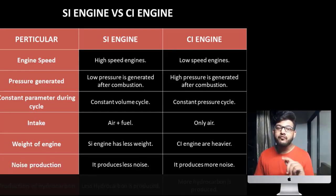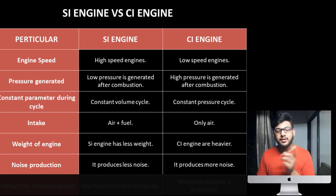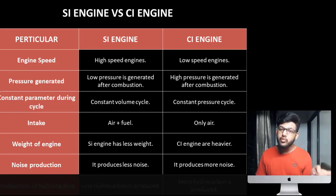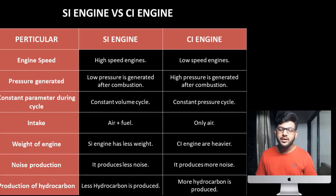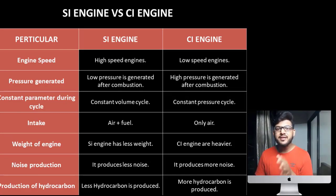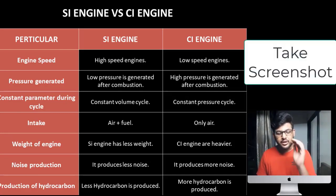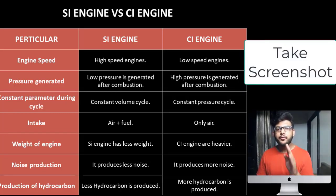Next is noise production. The engine with higher pressure will produce more noise. Since pressure is lower in SI engine, noise will also be lower. Since pressure is higher in CI engine, noise will also be more in CI engine. Next is production of hydrocarbons. Hydrocarbons are the exhaust gases formed during the combustion process. In petrol engine, hydrocarbons are produced less. In diesel engine, they are produced more.